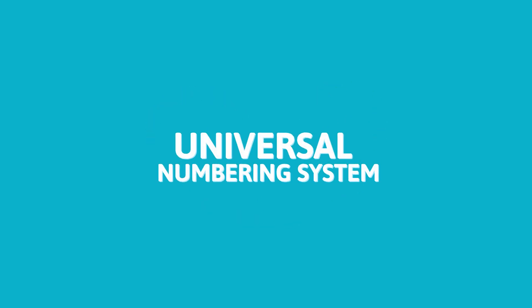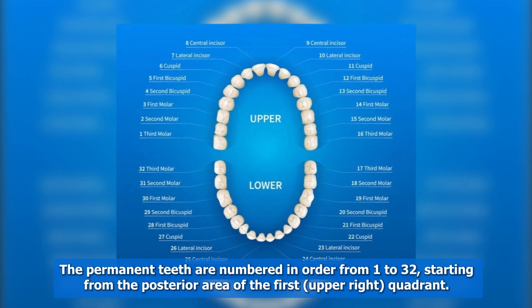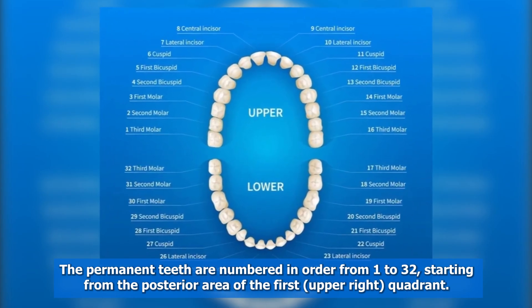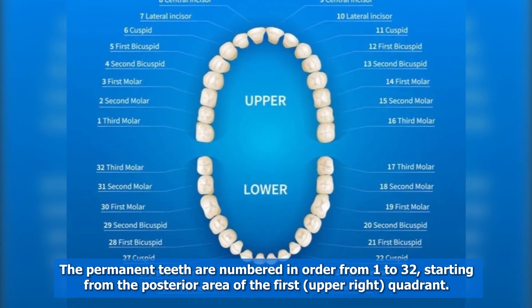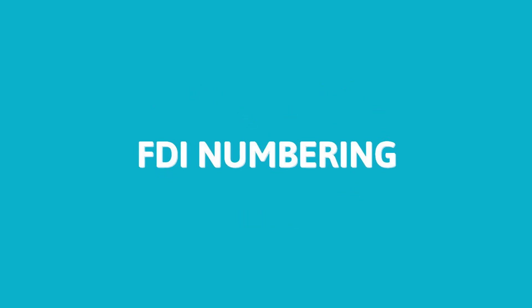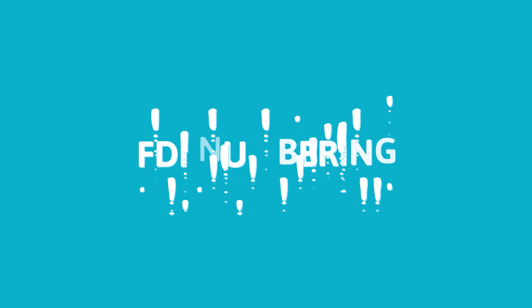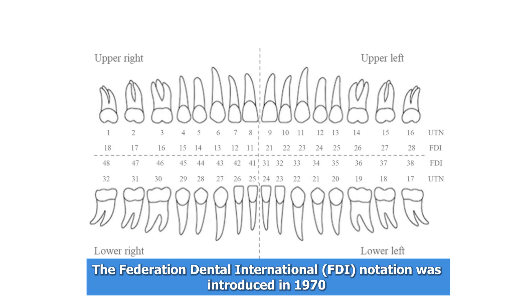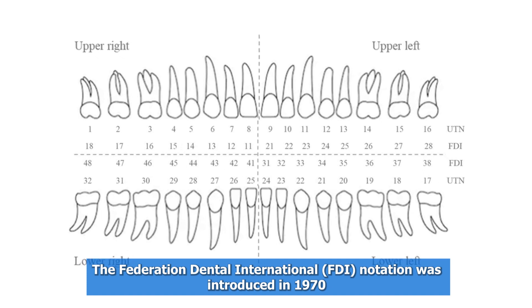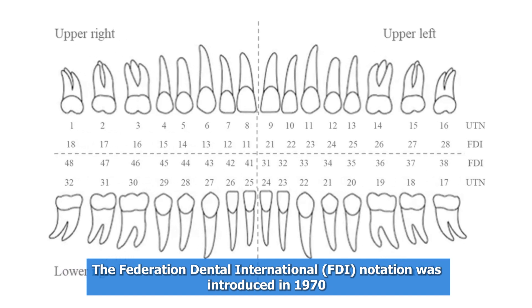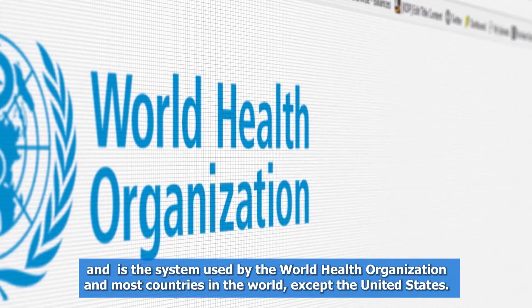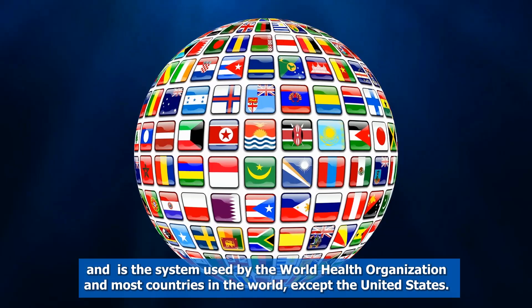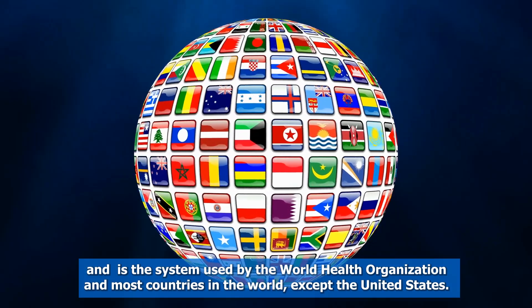The Universal Numbering System numbers the permanent teeth in order from 1 to 32, starting from the posterior area of the first upper right quadrant. The FDI Numbering System — introduced by the Federation Dental International in 1970 — is used by the World Health Organization and most countries in the world, except the United States.